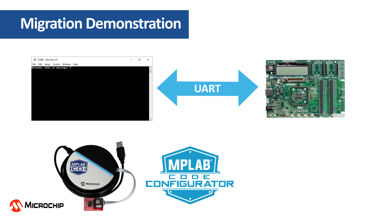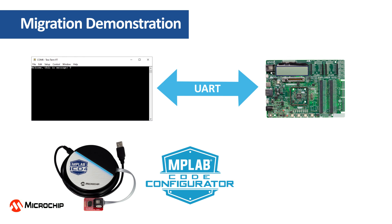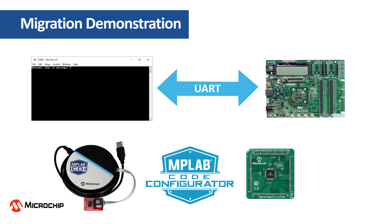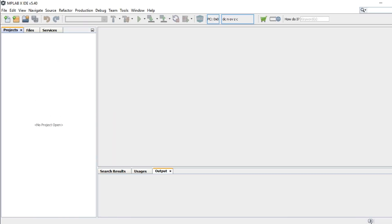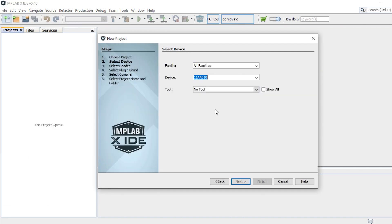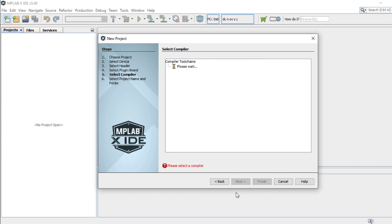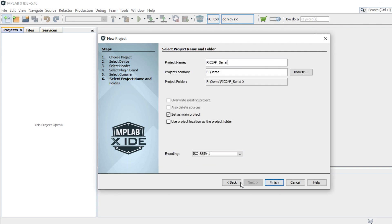To run this example, we will be using the Explorer 16/32 Development Board, a PIC24FJ64GU205 general-purpose plug-in module, and the dsPIC33CK64MC105 general-purpose PIM. First, let's create a new project for the PIC24FJ64GU205 device and launch MPLAB Code Configurator.